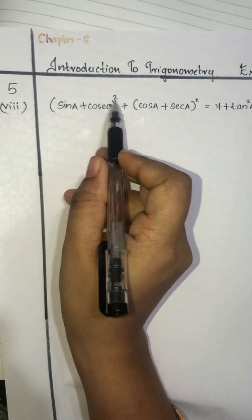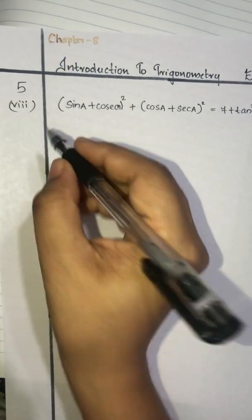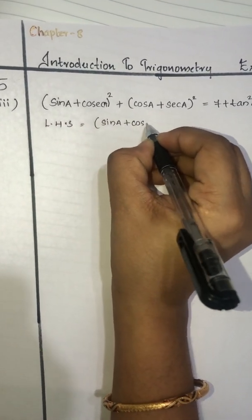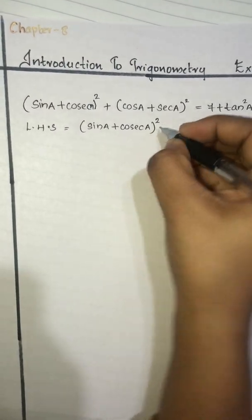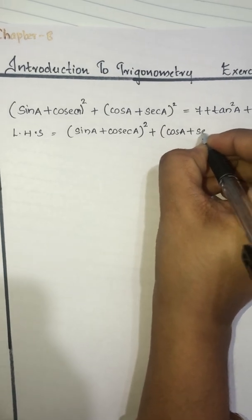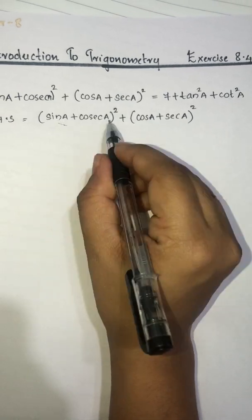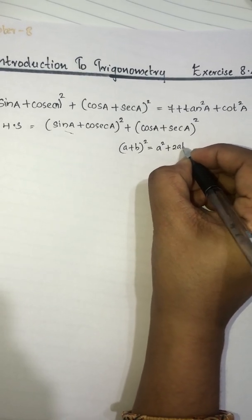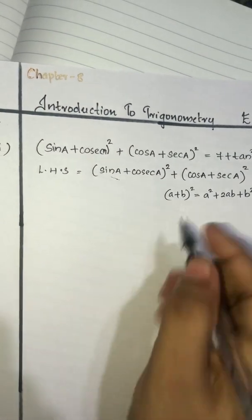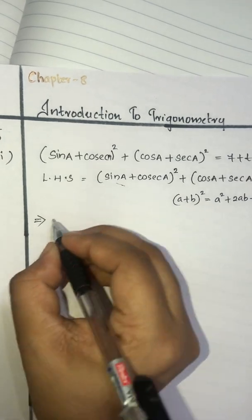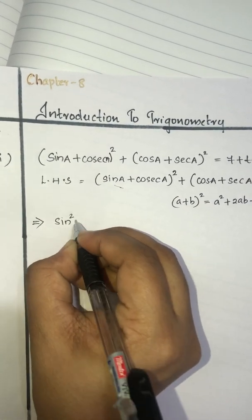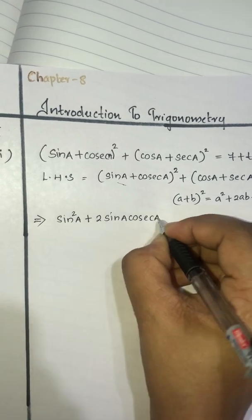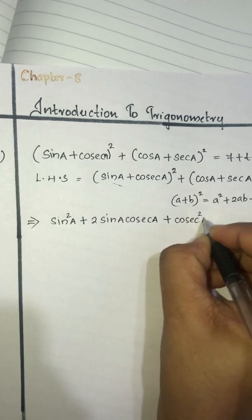Here (sinA + cosecA)² is of the form (a + b)². Now let's say that LHS is equal to (sinA + cosecA)² + (cosA + secA)², which is of the form (a + b)² = a² + 2ab + b².